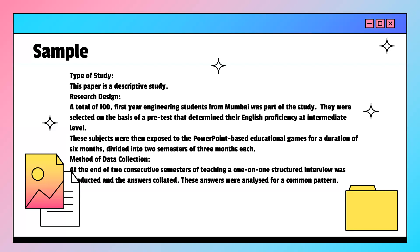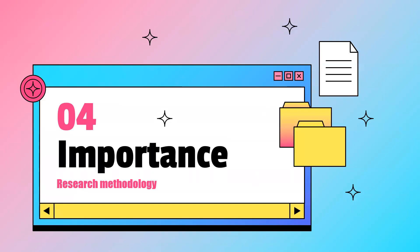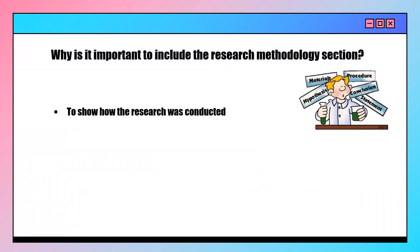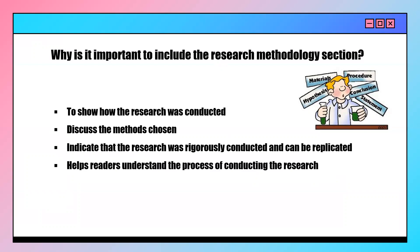Having understood the concept of research methodology, let us move on to the importance of research methodology. Research methodology is included to show how the research was conducted. It discusses the methods chosen and indicates that the research was rigorously conducted and can be replicated. It helps readers understand the process of conducting the research, and the doubts of the readers can be clarified in this section.